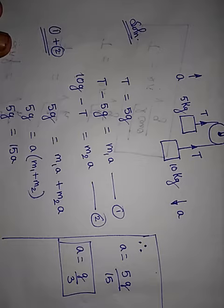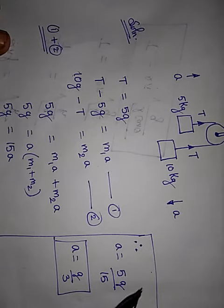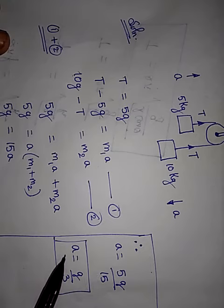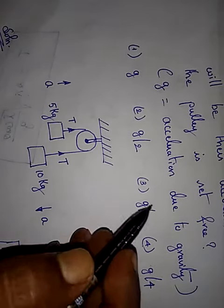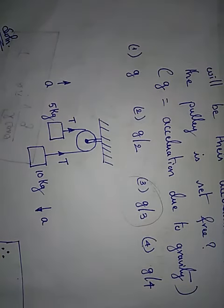Now, we want to find out A. So bring this 15 this side. So therefore, A is equal to 5 by 15 into G. Therefore, A is equal to G by 3 is the correct answer. So the correct option is option 3, which is G by 3. Thank you.